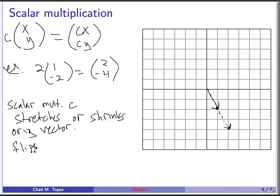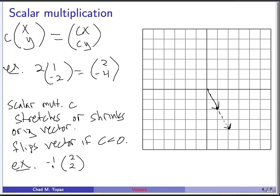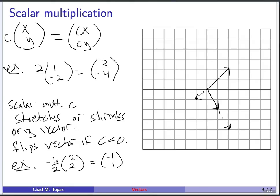Also, the scalar multiple flips the vector if c is negative. Let's do another example: take the vector (2, 2) and multiply it by the scalar negative one-half. That equals (-1, -1). I get the vector 2 over and 2 up — that's vector (2, 2). When I multiply by negative one-half I get (-1, -1), a vector that points in the exact opposite direction and is half as long. The negative sign flips it; the one-half multiplies the length by one-half.